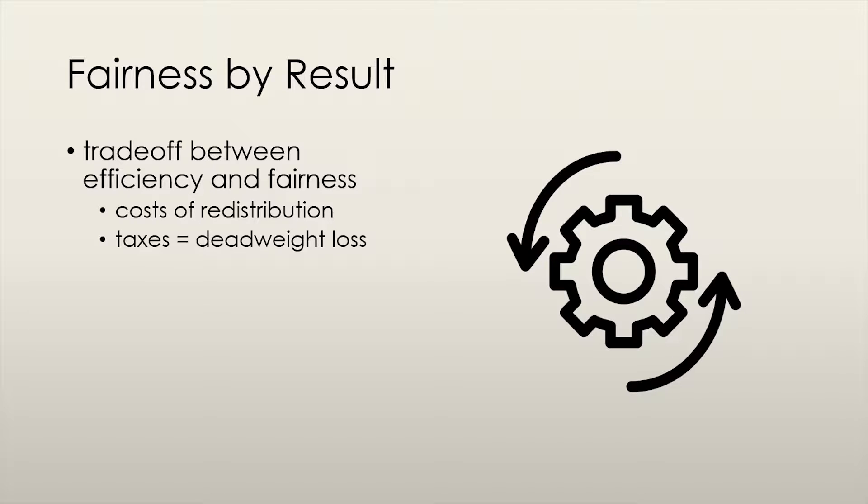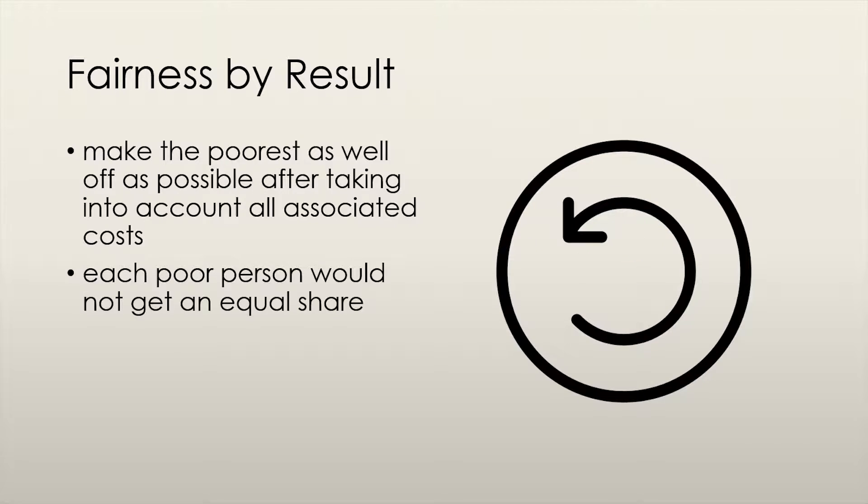This is because taxing income results in people wanting to work less and the quantity of labour being less than the efficient quantity. The 19th century idea was thus revised to state the following: we want to make the poorest as well off as possible after taking into account all of the associated costs.